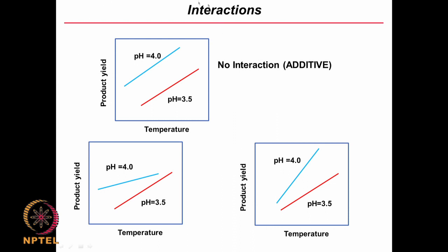Interaction means if 2 variables behave in an additive fashion. For example, looking at product yield as a function of temperature and pH: at pH 3.5, as temperature increases, product yield may go up, and at another pH the product yield also goes up — the 2 lines look almost parallel, so the effect is additive. But if at pH 4 the yield goes up with a different slope, then pH and temperature are interacting — the effect of temperature is not the same at all pH values but depends on the pH.